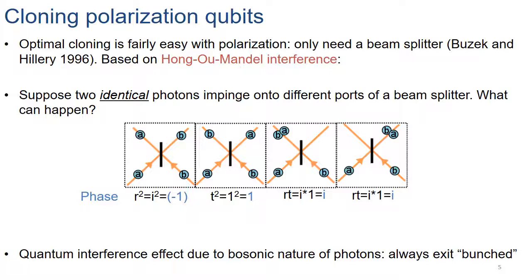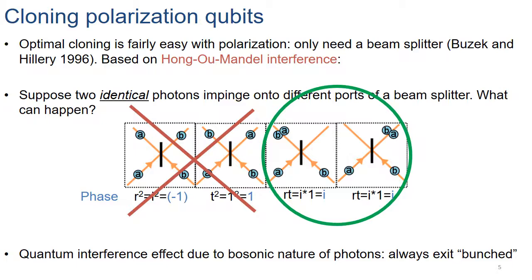We should add them coherently with their phase to see the interference. The first case is that both photons reflect from the beam splitter — using the convention that a reflection gives rise to a phase of i, this case gets a phase of minus one. If both photons transmit, there's a phase of one, and if one transmits and the other reflects, that gets a phase of i. If you add these four different amplitudes together, you find that two of them interfere destructively and two interfere constructively. The ones that interfere constructively are the cases where both photons exit from one port of the beam splitter. This is the Hong-Ou-Mandel interference effect: if the photons are indistinguishable, they always exit the beam splitter bunched.